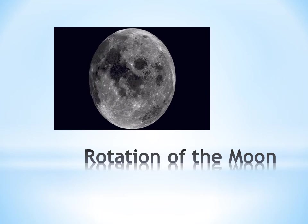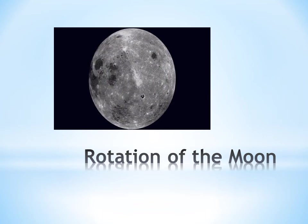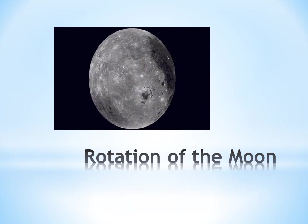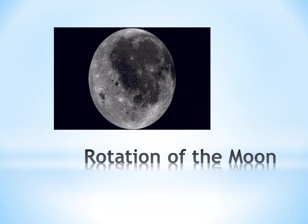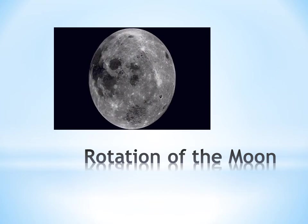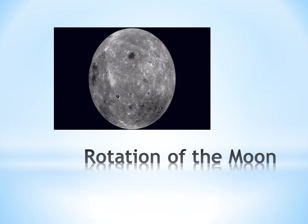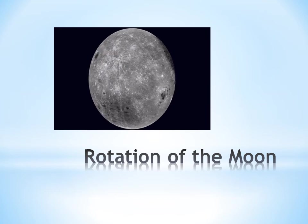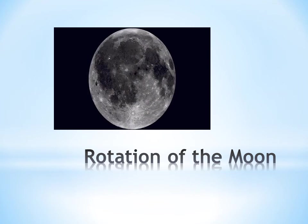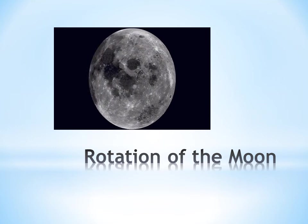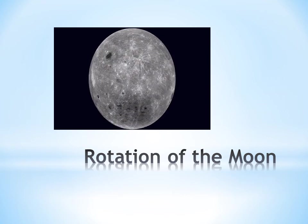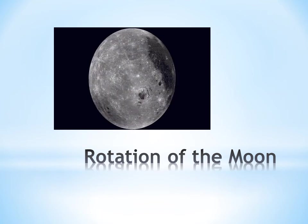Rotation of the moon. There are two kinds of movements: rotation and revolution. Revolution is the movement of the moon around the Earth. Rotation is the movement of the moon on its axis — an imaginary line passing through the moon. This rotation of the moon causes day and night on the moon, just as Earth's rotation on its axis causes day and night on Earth.